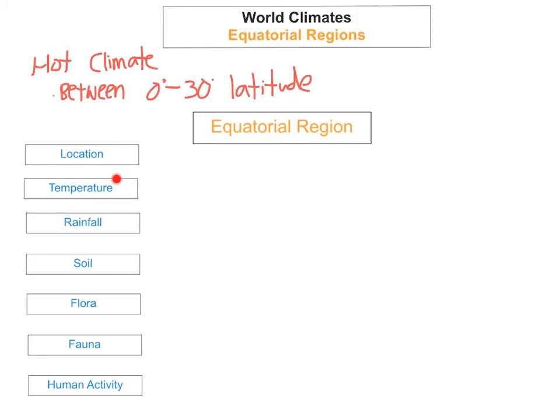For the equatorial region we're going to look at these different headings: location, temperature, rainfall, soil, flora, fauna, and human activity. So the first one, location—where will you find equatorial regions? Well, you'll find them 8 degrees north and 8 degrees south of the equator. An example of a country that you'll find this climate is Indonesia.